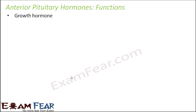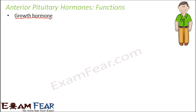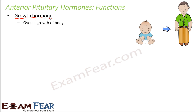First we will talk about the growth hormone. As the name itself tells, it is the hormone which helps the cells to grow. It sends that instruction to all the cells of the body to grow. So this is the hormone which actually helps you to grow from a small child to an adult, and it is responsible for the overall growth of the body. However, this hormone has to be present in the right amount.